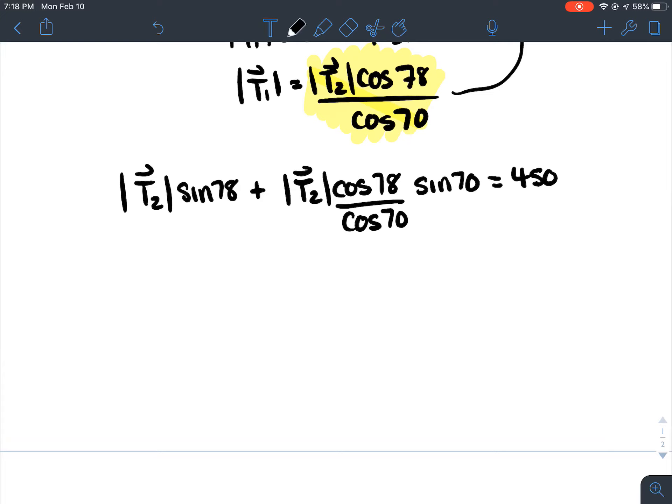So, yeah, and then I could just like actually figure out what sin 78 is. So, I know that's like 0.978148 T2 plus, and I got cos 78 divided by cos 70 times sin 70. Which is 0.57123 T2 equals 450.